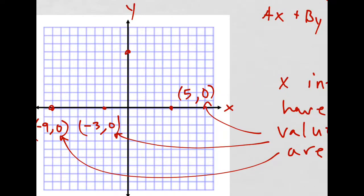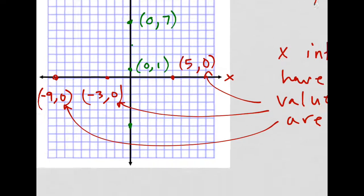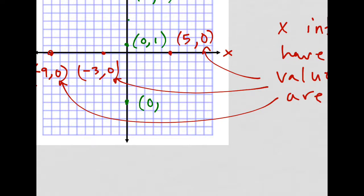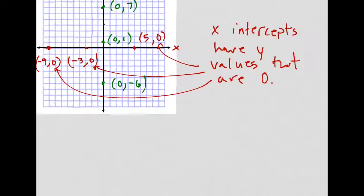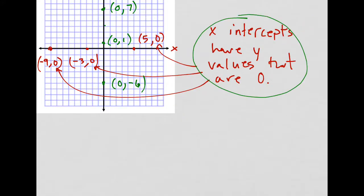Okay, what about for Y-intercepts? Here, I'll draw these. Maybe you can point these out. What would this be? This would be 1, 2, 3, 4, 5, 6, 7. No. Remember, X comes first. That's 0 because I don't move at all, left or right. 0, 7, 0, 1, and 0, negative 6. So, look at that. If you were to compare it with this sentence, what would you say? Y-intercepts have X-values that are 0.